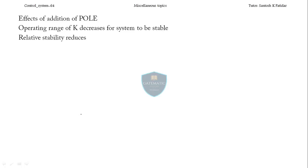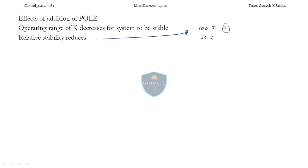Second: relative stability reduces. Before adding the pole the system will be stable, but after adding, relative stability will decrease. For a practical example, if you have 100 rupees, after adding one pole you will be left with only 50 rupees — stability is going to decrease. So relative stability decreases when you add one pole into the system. Next, the system becomes more oscillatory.